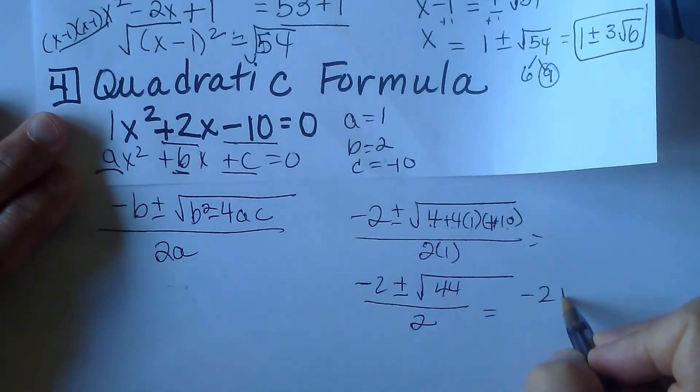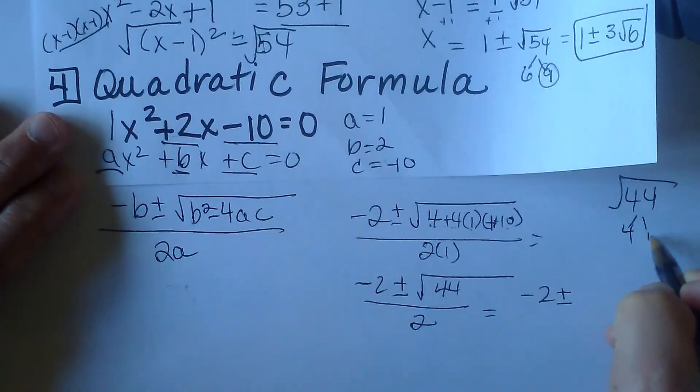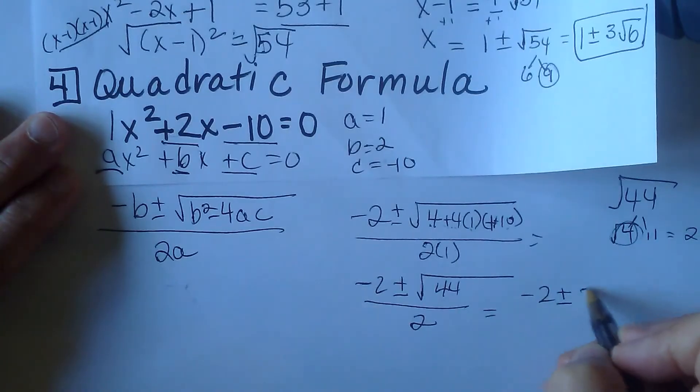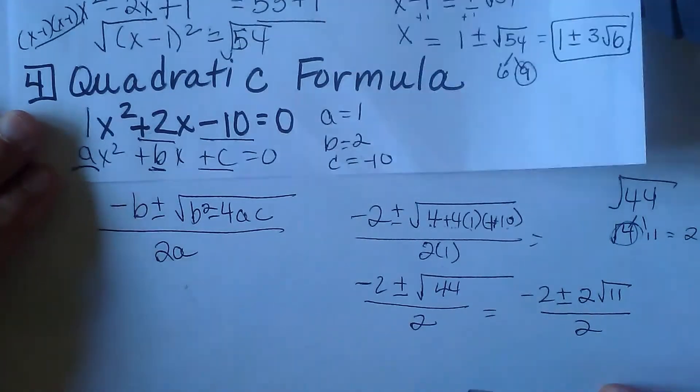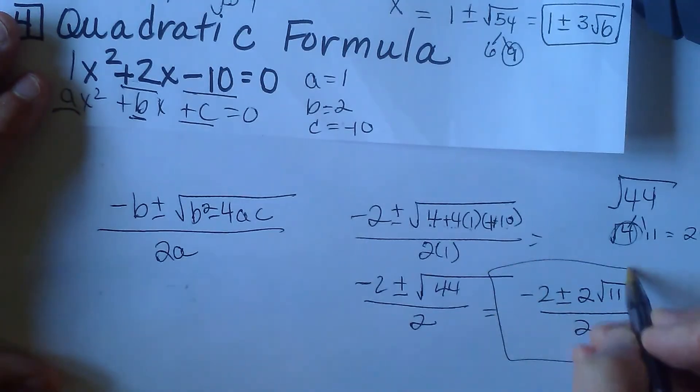And that gives us negative 2 plus or minus. Now let's think about the square root of 44. That breaks down to 4 times 11, and 4 is a perfect square. So we can simplify that to 2 root 11. So 2 root 11 all over 2. Now we're not quite done. We just need to simplify this.